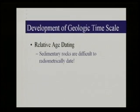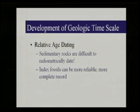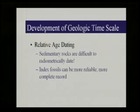Sedimentary rocks are difficult to date radiometrically. There is an exception: glauconite, a clay mineral, incorporates potassium in its formation and can be dated using the potassium-argon method — however, since argon is a gas, you must ensure the system is closed or you'll get the wrong date. Index fossils can be much more reliable and give a more complete record for the geologic time scale. Although radiometric dating has enabled us to pinpoint precise events, fossils and the limited time span of different organisms can be more reliable when looking at sedimentary rocks.